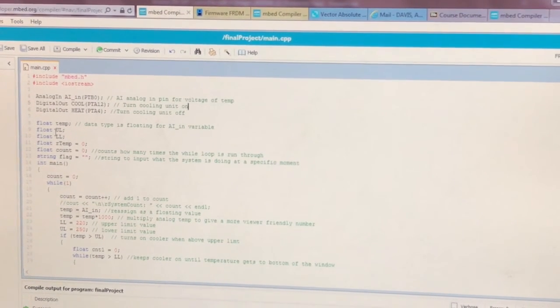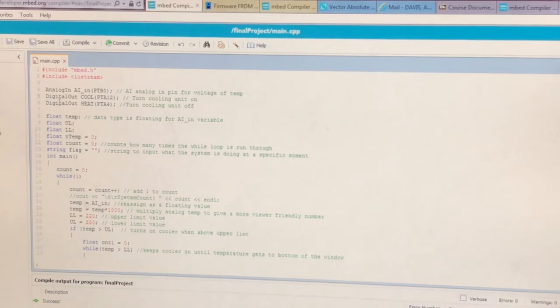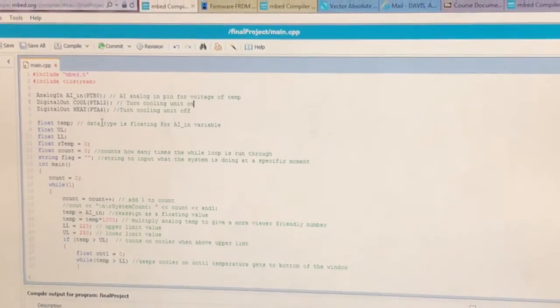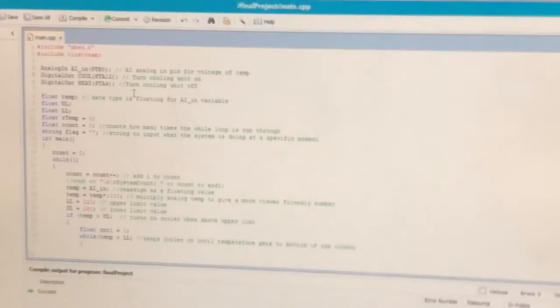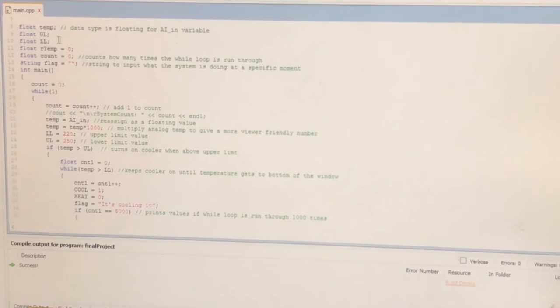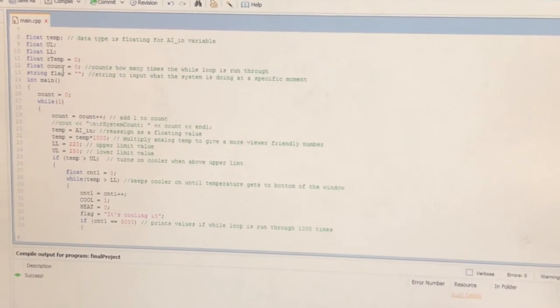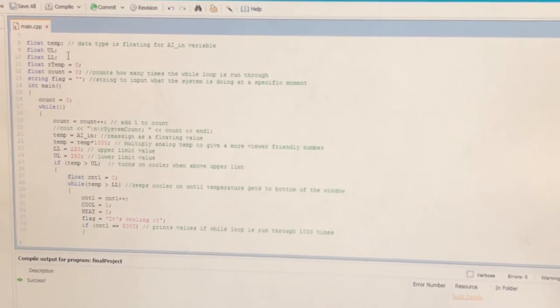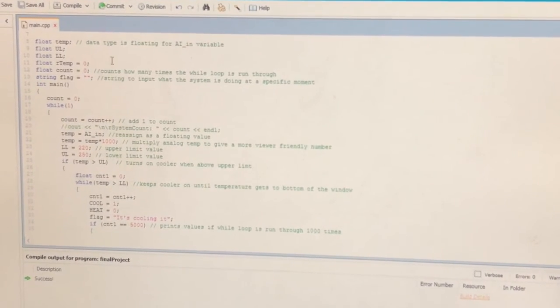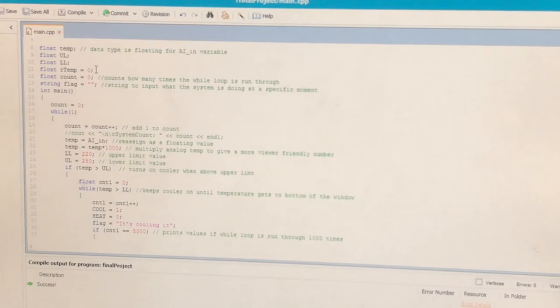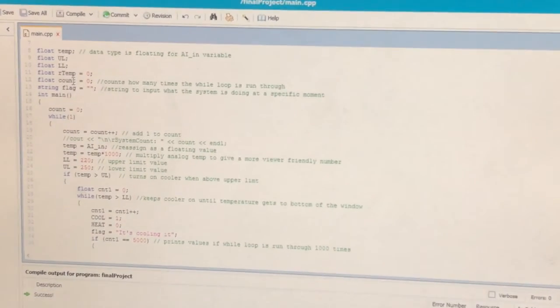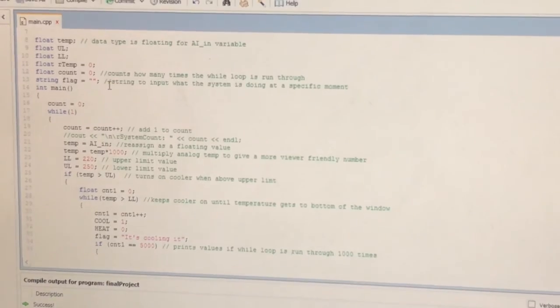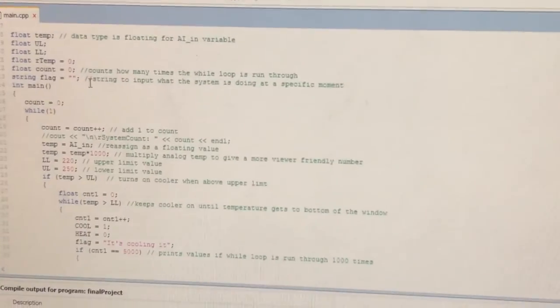To start coding for the microcontroller to control our temperature controlled box, we first initialize an analog input and two digital outputs. One of the outputs cools it, one heats it up, and the analog input takes a temperature value. We then create floats for an upper and lower limit for the temperature values we want to set our box at. We also have a float for the temperature itself that is read in and a float for the actual temperature in Fahrenheit. This count counts how many times our first while loop is run through and a flag is set up so that we can print out what the system is doing at a specific time rather than every time it is run through.